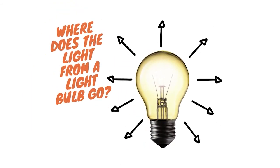When we turn on a source of light, such as a light bulb, where does the light go? The answer is hopefully obvious — it goes everywhere. So out of all of these arrows, which one is pointing in the direction that we want? Just the one on top. Everything else is wasted.